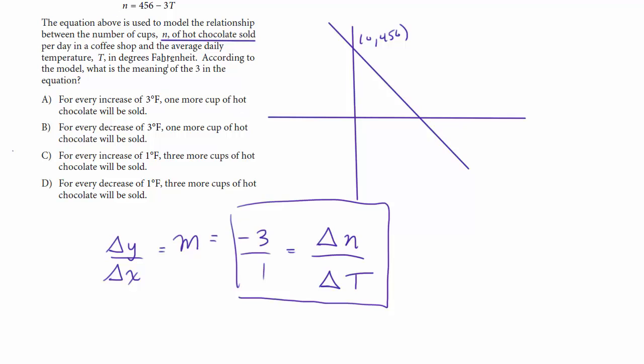So what does the 3 represent here? Well, let's go to the choices and see which one might make sense. For every increase of 3 degrees Fahrenheit, one more cup of hot chocolate will be sold. That has it flipped because, again, for every change of 1 degree, delta t of 1, you have a decrease of 3 cups sold, negative 3. All right, so let's write that down.